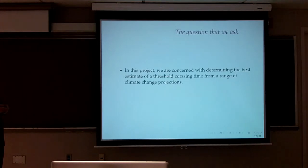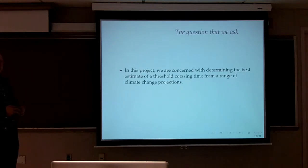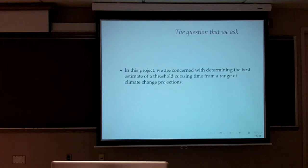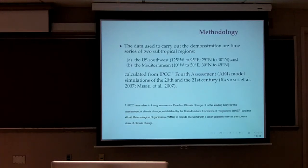Our interest is in determining the best estimate of a threshold crossing time from a range of climate projections. I have ten more minutes. So as I said, there will be a third method that's at the end, but I'm going to just put these methods in context and show you some of the comparisons between them in the example of drought in the Southwest and in the Mediterranean.